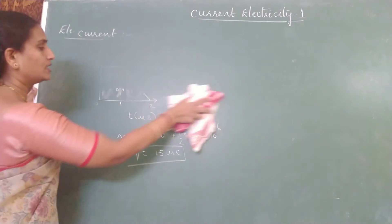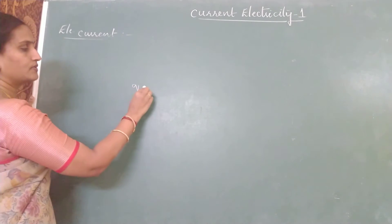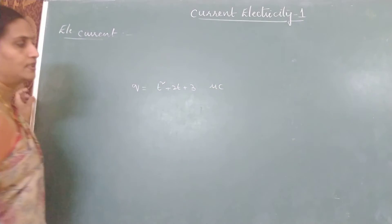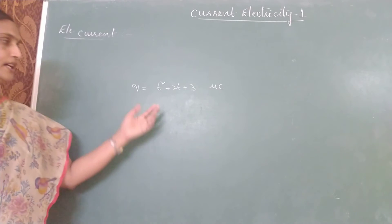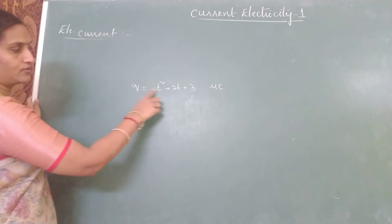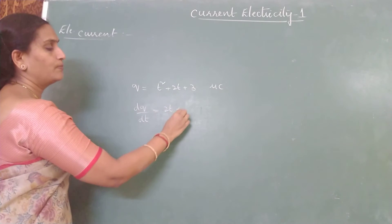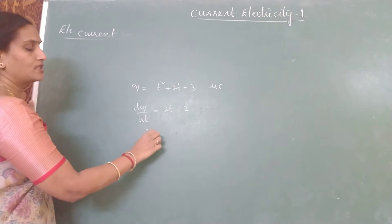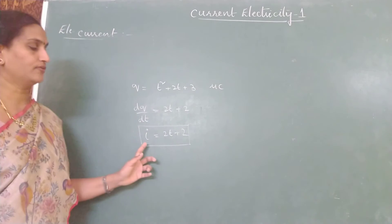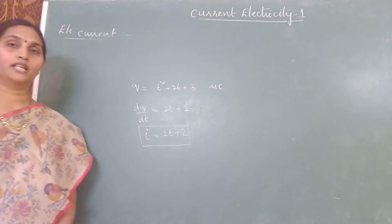Sometimes the charge passing through the cross section may be given as a function of time — say Q varies as some equation in microcoulombs. To determine the current at t = 2 seconds, differentiate: dQ/dT = 2T + 2, which gives the equation representing current. Once you know this equation, you can find the current at t = 1 second, t = 2 seconds, and so on. These are the four simple question types related to electric current.